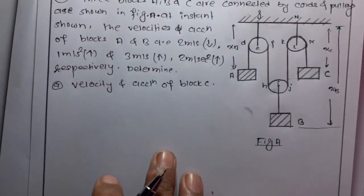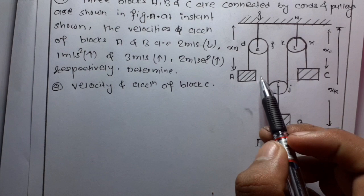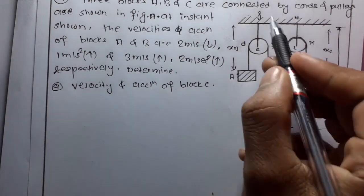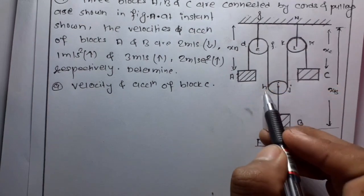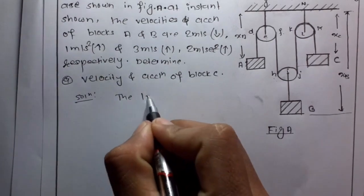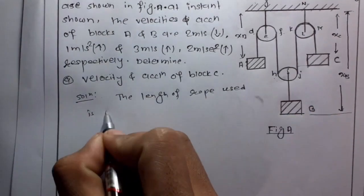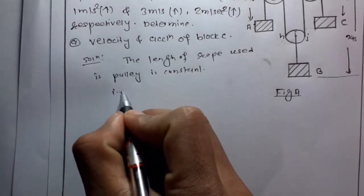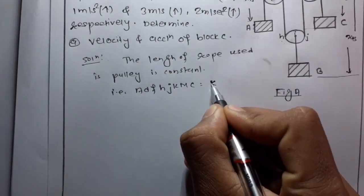The simple logic for this question is that the length of rope used in this pulley is constant. So we can say the length A-D-F-H-G-K-M-C is constant, and G-E-N-L-I-B length is constant, and also D-F-K-M and H-G length will be constant.